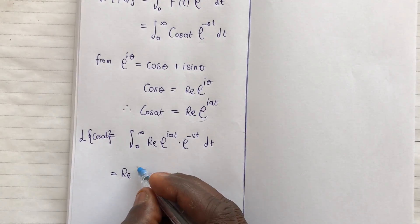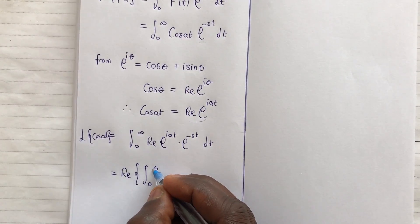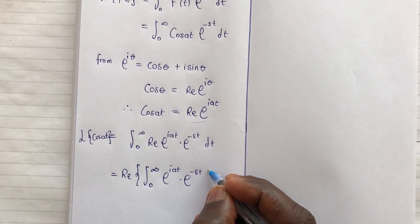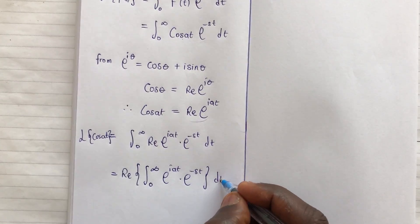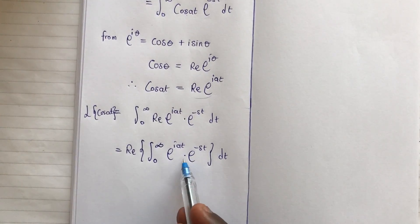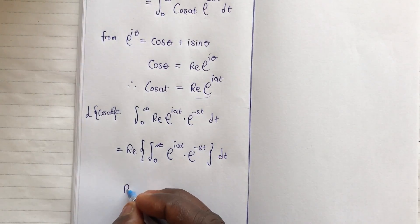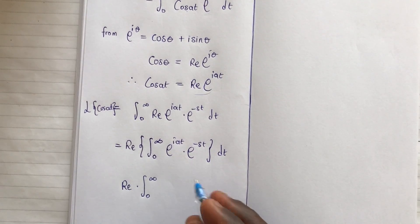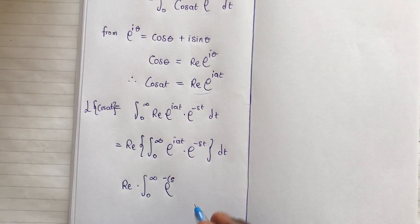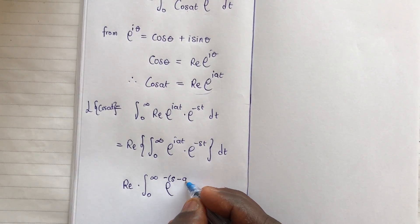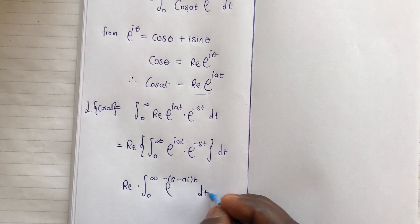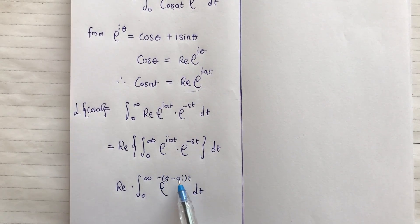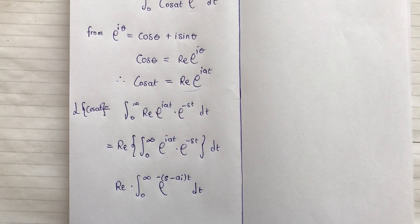Factoring the real part operator outside, we have Re times the integral from zero to infinity of e^(i·at) times e^(minus st) dt. Combining the exponents using index laws, this gives Re times the integral from zero to infinity of e to the power (minus s + a·i)·t dt, where the minus st gives negative st and the i·at gives positive a·i·t.